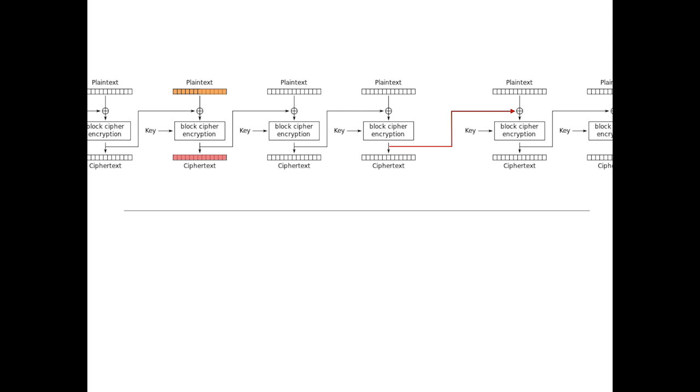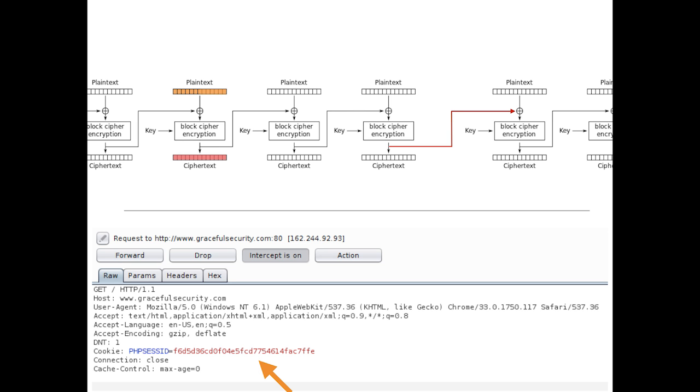So imagine that you are a man in the middle between a victim and the victim is going on bank.com or something like that. And they encrypt some plaintext, and you observe the ciphertext of that, and you know that there is something important. It could be a session ID, a cookie, a password, could be anything really, but you know it's important, and you want to decrypt it.